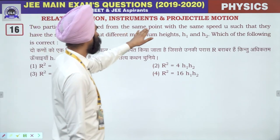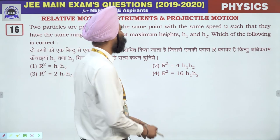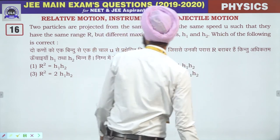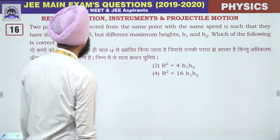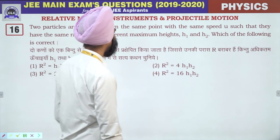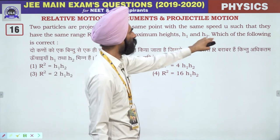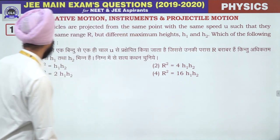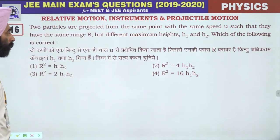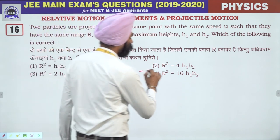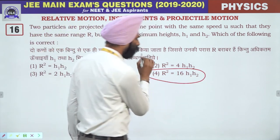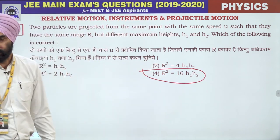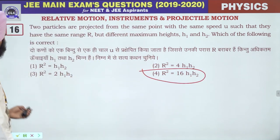Sixteenth question: Two particles projected with same speed u having same range R but different maximum heights h1 and h2. From the product of heights: h1·h2 = (u²sin²α/2g)·(u²cos²α/2g) = u⁴sin²αcos²α/(4g²) = R²/16. Therefore R² = 16·h1·h2.